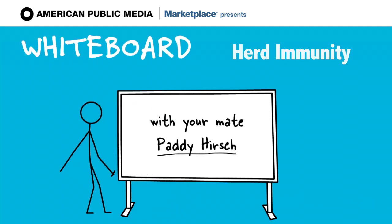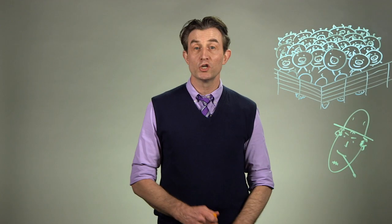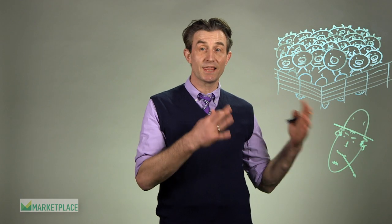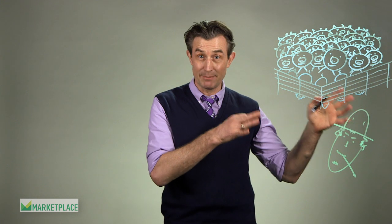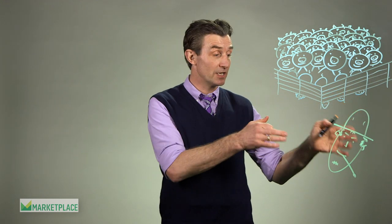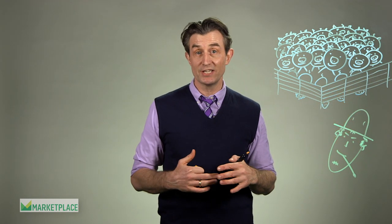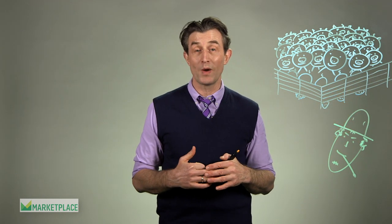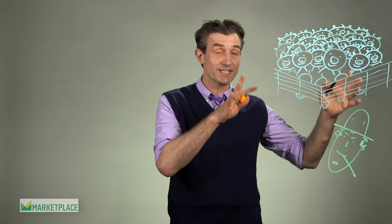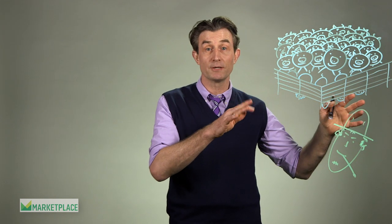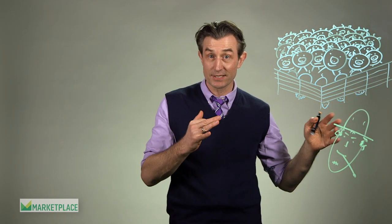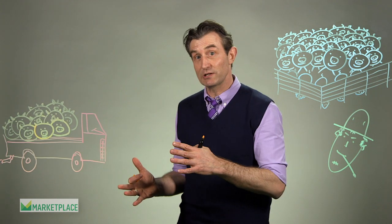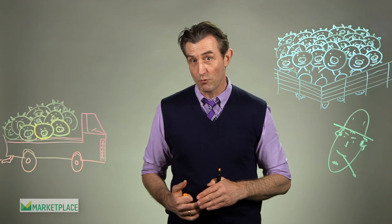Hi, it's Paddy Hirsch of Marketplace. To explain this theory of herd immunity, I'd like to introduce you to this herd of 90 pigs. The guy who owns them is very worried about a contagious disease called swine dysentery, so he's decided to vaccinate the whole herd. But he's also really into round numbers and would rather have 100 pigs for accounting purposes, so he heads off to market to buy 10 more.